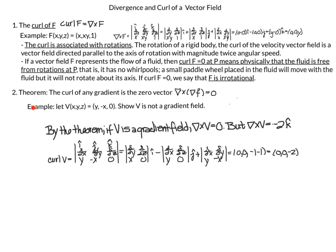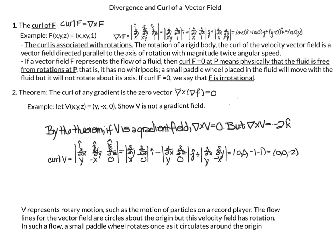It's a different situation for this next example: let v(x,y,z) = (y, -x, 0). This is a vector field we had looked at in a previous video representing the motion of particles on a record player. The flow lines for the vector field are circles about the origin, but this velocity field does have rotation, and the small paddle wheel rotates once it circulates around the origin, and we can verify that by looking at the curl.